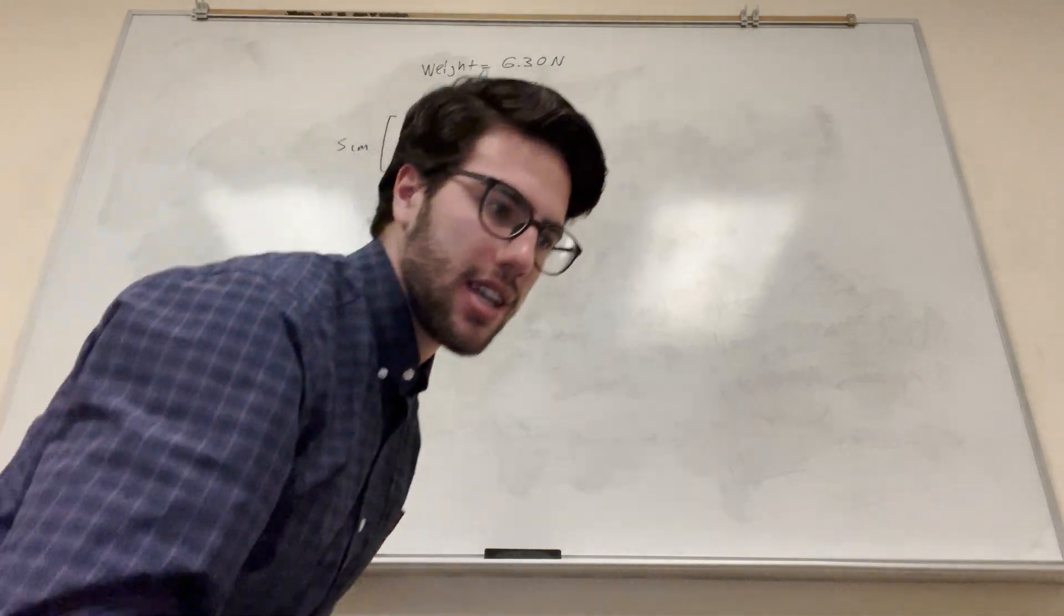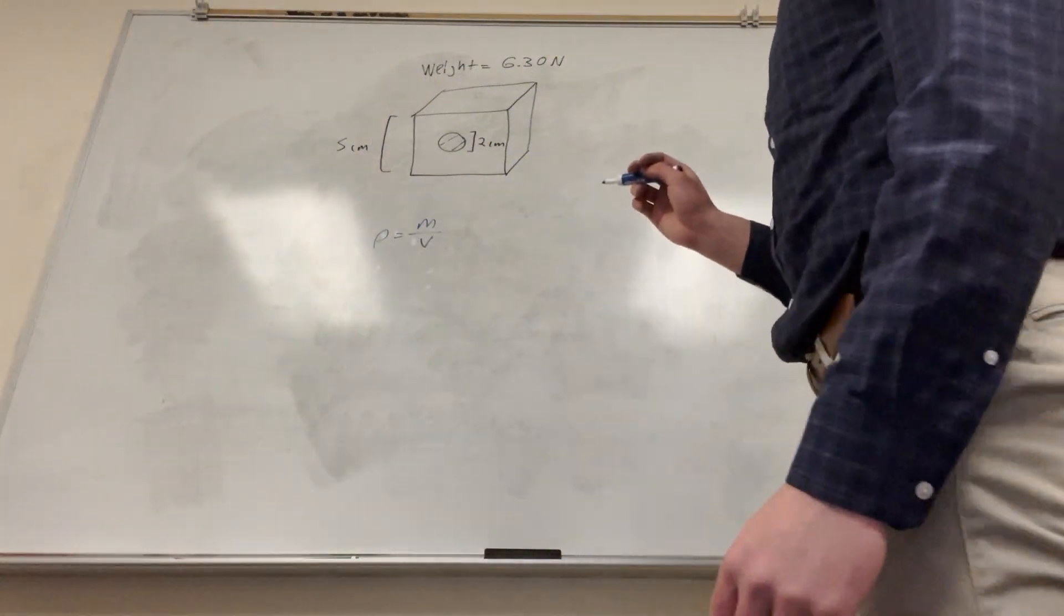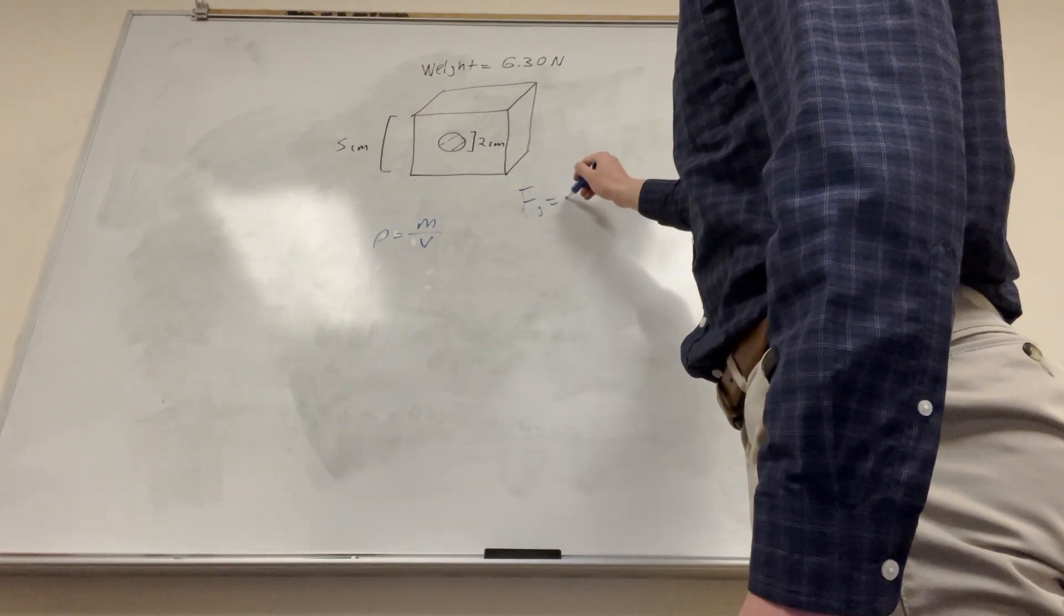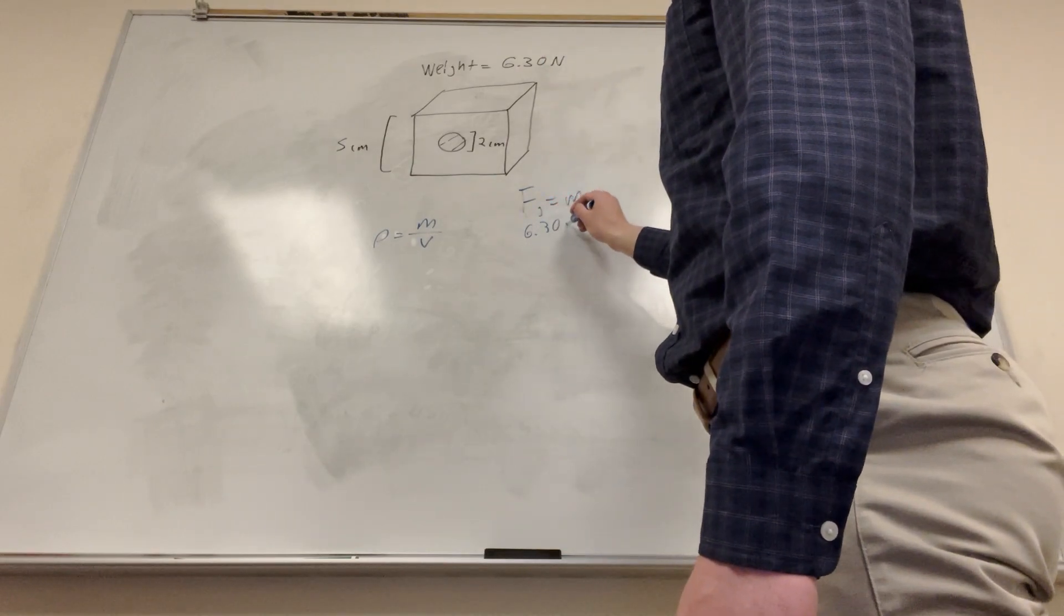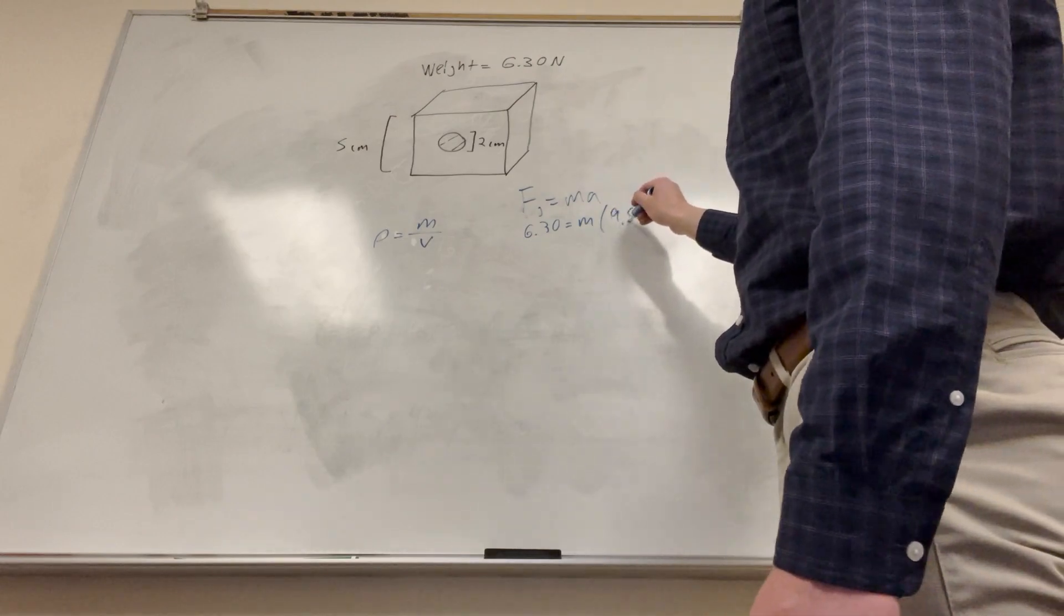So let's first calculate mass. So we have weight in newtons. Newtons is not mass. Newtons is force. So force of gravity is equal to mass times acceleration. We're given the force, so it's 6.30 is equal to mass. And then the acceleration of gravity on Earth, 9.81.